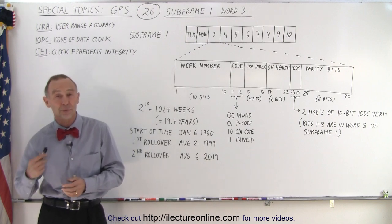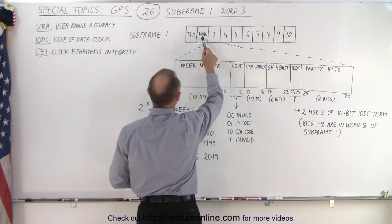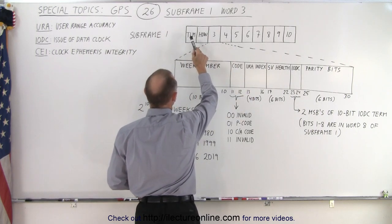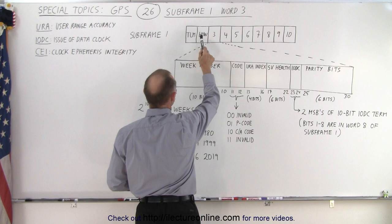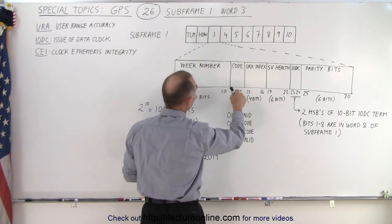So what is the content of word three in subframe one? Again here's subframe one. The first two words, one and two, are the TLM word, the telemetry word and the handoff word. Now we go to word three where we contain the week number,